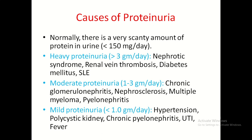Normally there is a very small amount of protein in urine — less than 150 mg per 24 hours. Heavy proteinuria is more than 3 g per day; causes include nephrotic syndrome, renal vein thrombosis, diabetes mellitus, and systemic lupus erythematosus. Moderate proteinuria is 1–3 g per day; causes include chronic glomerulonephritis, nephrosclerosis, multiple myeloma, and pyelonephritis. Mild proteinuria is less than 1 g per day; causes include hypertension, polycystic kidney, chronic pyelonephritis, urinary tract infections, and fever.